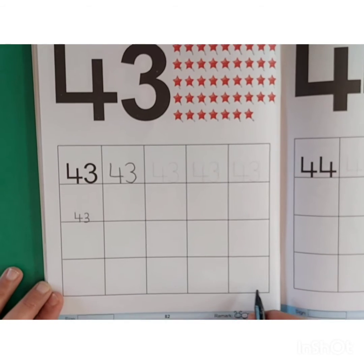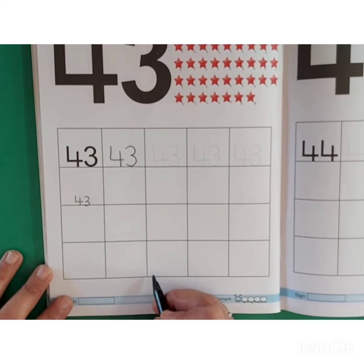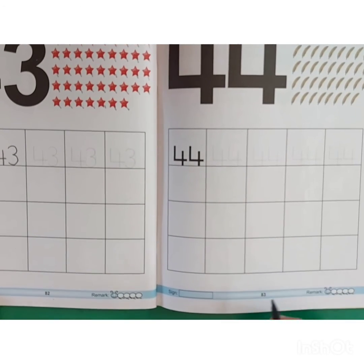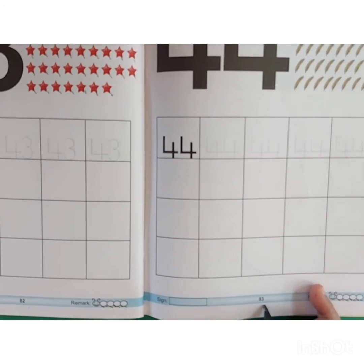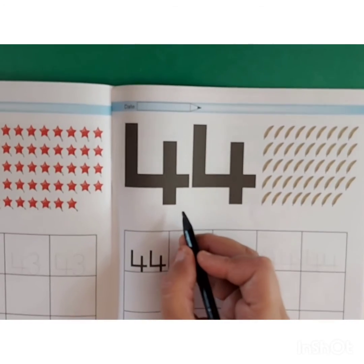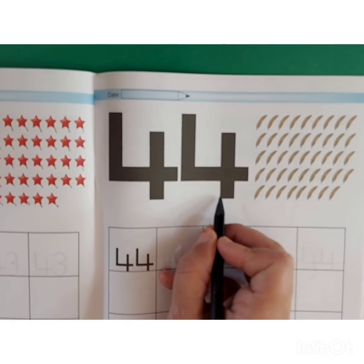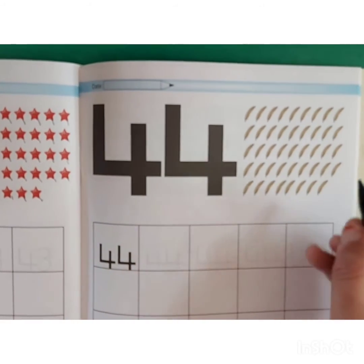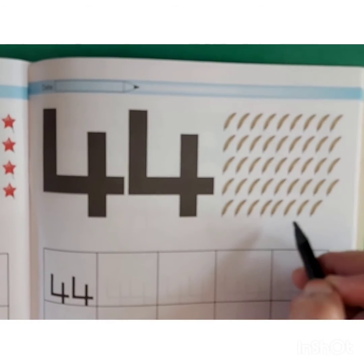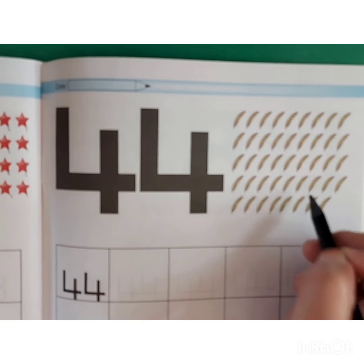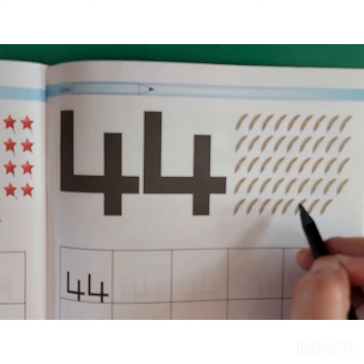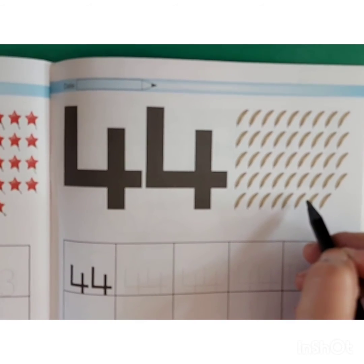Now page number 83. Which number is this? 44. Kids, here some quills are given and you have to cut and count these quills with the help of your parent. Okay kids?